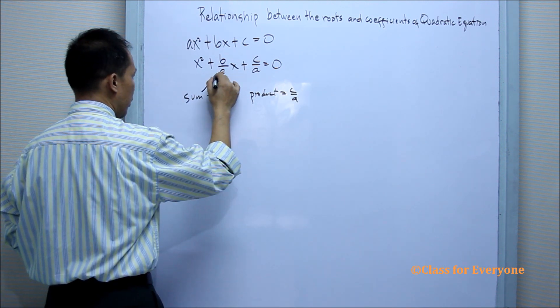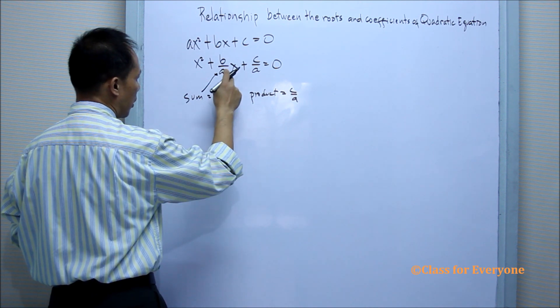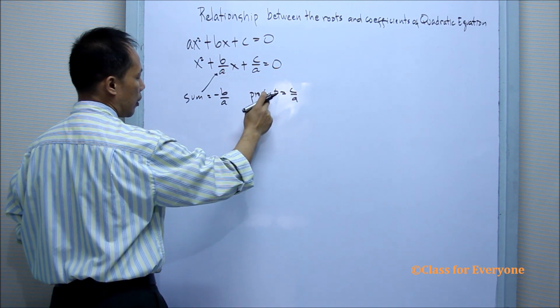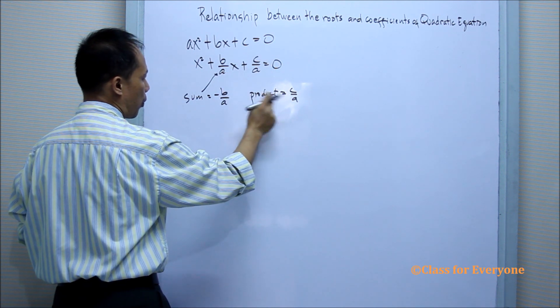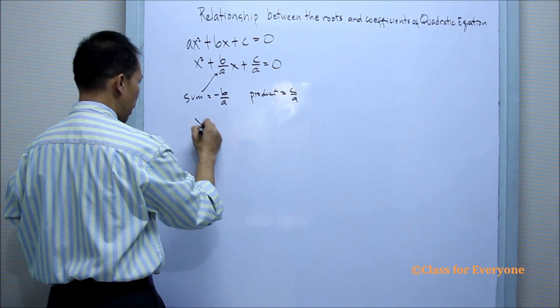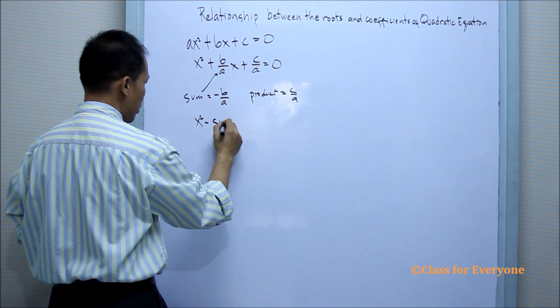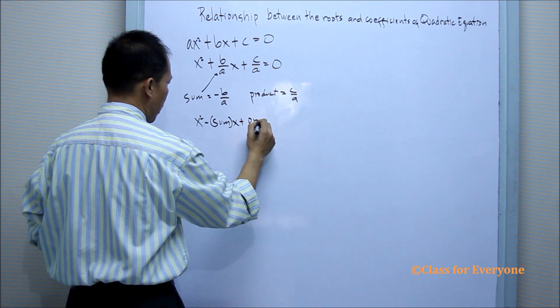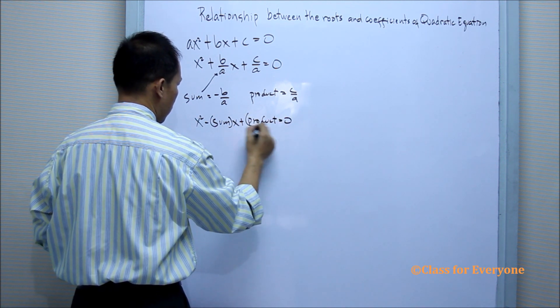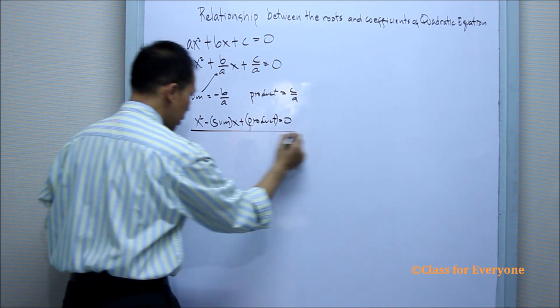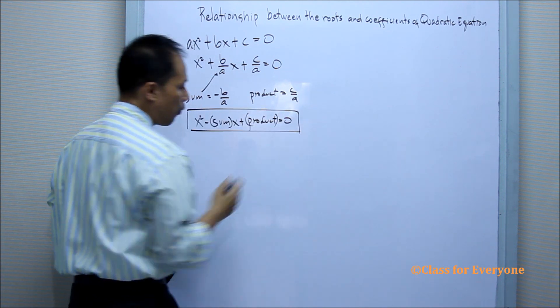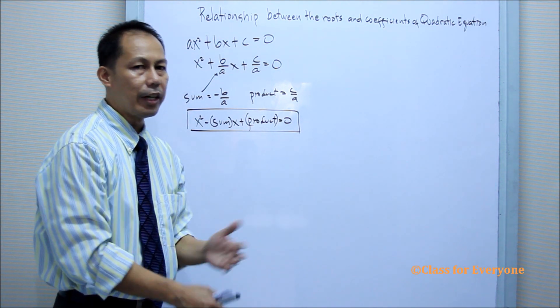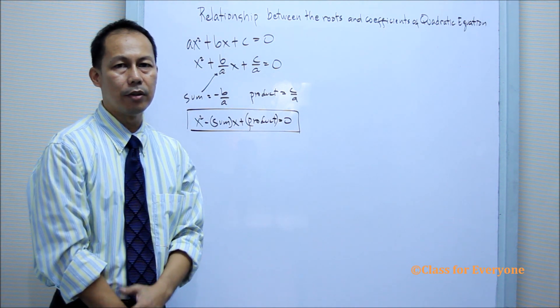This sum is the opposite of B/A and this C/A is the product. So we can substitute it as x² - (sum)x + (product) = 0. By doing this, we can find the equation of the quadratic equation even if we are just given the roots of the quadratic equation.